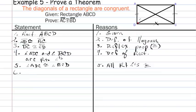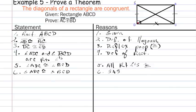The sixth step: now that we have side-angle-side in each of the triangles, we can make our triangle congruence statement — triangle ADC is congruent to triangle BCD — by the side-angle-side theorem. Now that those two triangles are proved congruent, we can say segment AC is congruent to segment BD because of corresponding parts of congruent triangles are congruent. Thus we have proved that the diagonals of a rectangle are congruent.